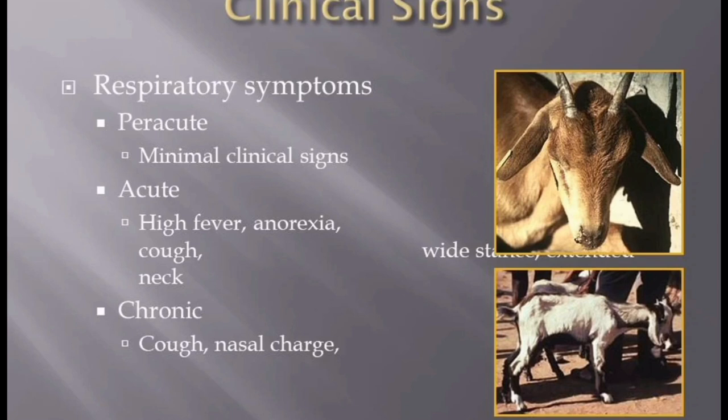Contagious Caprine Pleuropneumonia is strictly a respiratory disease. Peracute, acute, and chronic forms may be seen in endemic areas. Peracutely affected goats can die within one to three days with minimal clinical signs. In acute disease, the initial signs are a very high fever, lethargy, and anorexia, followed within two to three days by coughing and labored respiration. The cough is frequent, violent, and productive.